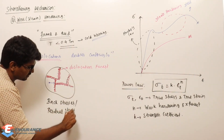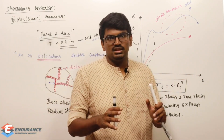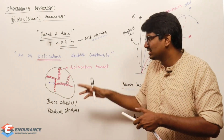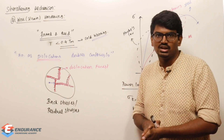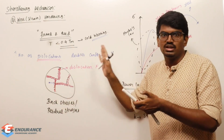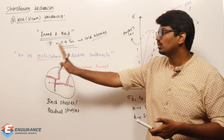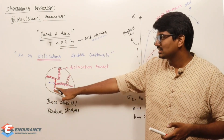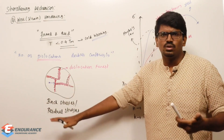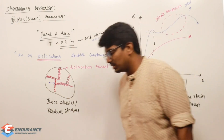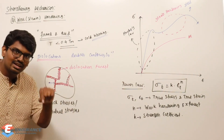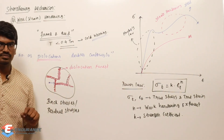The back stress means: when a dislocation tries to move towards the grain boundary and contacts the dislocation forest, the forest offers a compressive stress that opposes the dislocation, preventing it from passing through the grain boundary. This opposing stress is the back stress or residual stress.